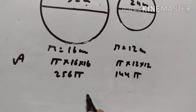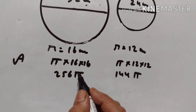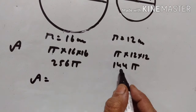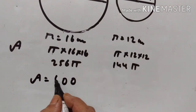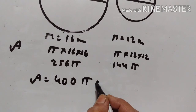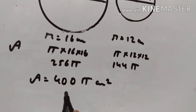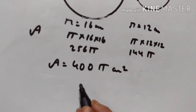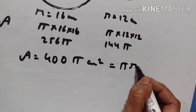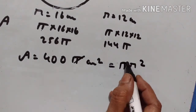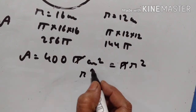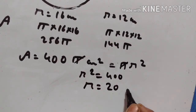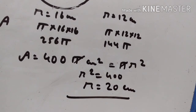The sum of the areas of the two given circles is 256π + 144π = 400π square centimeters. The area of the new circle equals the sum of the areas, so πr² = 400π. Pi cancels out, giving r² = 400. Therefore r = √400 = 20. Radius is equal to 20 centimeters.